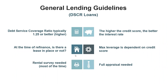Going over DSCR loans: debt service coverage ratio typically 1.25 or better is preferred. The higher the credit score, the better the interest rate. Lower loan-to-value means better pricing. At the time of refinance, is there a lease in place or not? These are key questions for pricing the loan, as there are caveats when the property is not leased. Max leverage is dependent on credit score and DSCR. If the property is vacant at the time of refinance, a rental survey is needed — that's Form 1007, an addendum to the appraisal. On these loans a full appraisal is usually required.